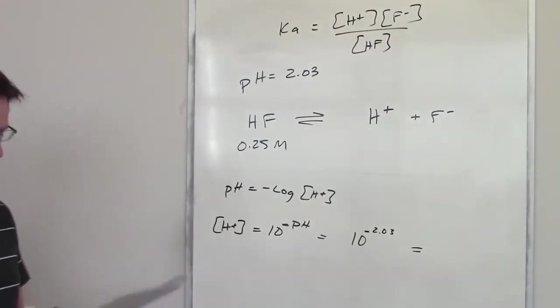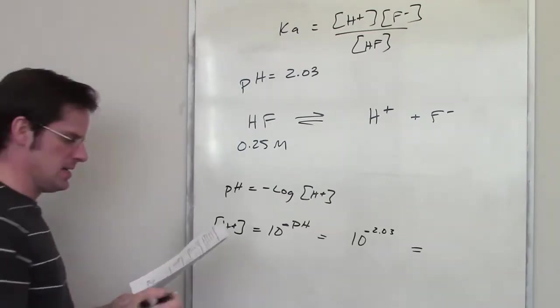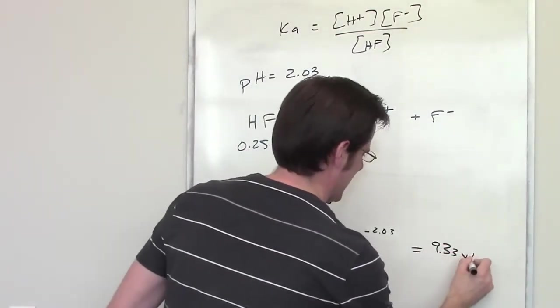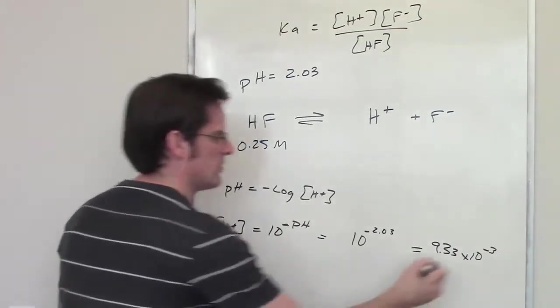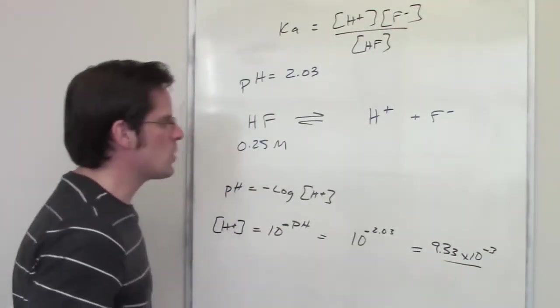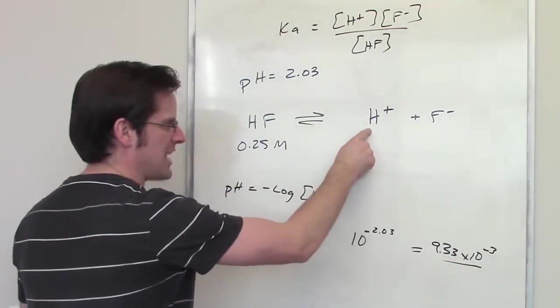That gives me the concentration at equilibrium of H+. Now, I've done this before. That value comes out to be 9.33 times 10 to the negative third. It's a very tiny number. So that's the concentration of H+ at equilibrium.